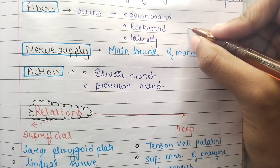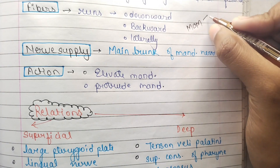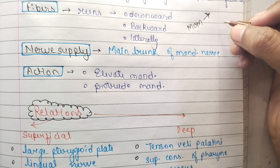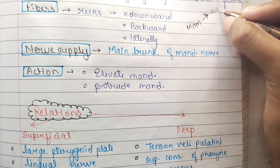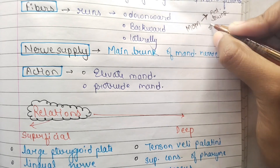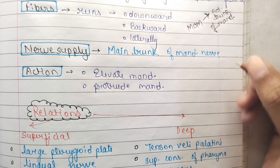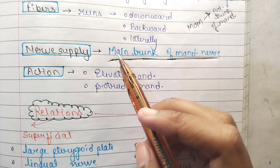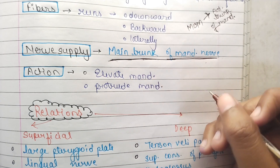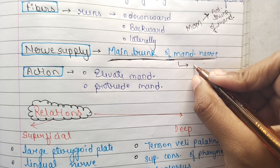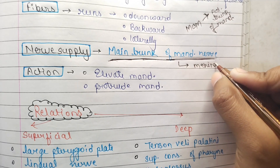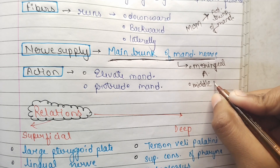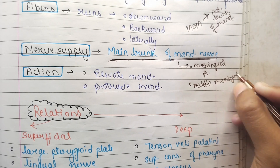Basically, all the muscles of mastication are supplied by the anterior trunk of the mandibular nerve. However, there is an exception: the nerve supply of the medial pterygoid is from the main trunk of the mandibular nerve. The main trunk of the mandibular nerve gives off the meningeal artery and the middle meningeal nerve.